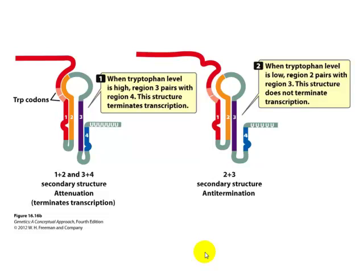When the tryptophan level is high, region 3 pairs with region 4 — and 1 pairs with 2, 3 pairs with 4. This structure disrupts transcription: the RNA polymerase falls off and transcription stops. This is a way of attenuating gene expression, because if you don't have transcription, you don't have translation. You don't need to make any more tryptophan if you have plenty of it available.